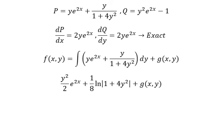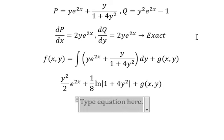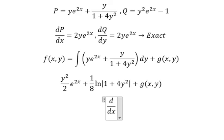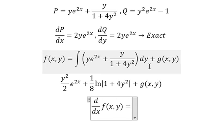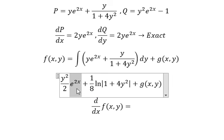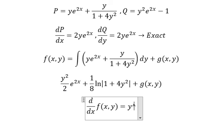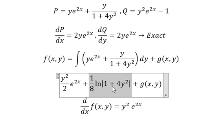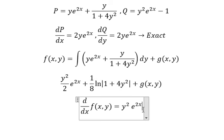Next, we need to take the first derivative of the function with respect to x. Since we integrated with respect to y, now we differentiate with respect to x. That term gives 2y squared times e to the power of 2x, and the other term has no x so it gives zero.